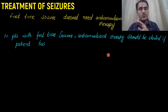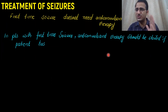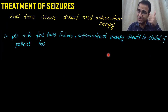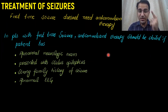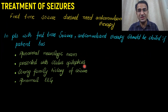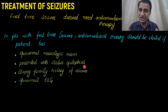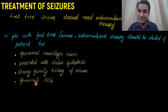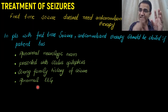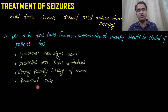First-time seizures do not need anticonvulsant therapy, unless there are certain exceptions: if the patient has an abnormal neurological exam, presented with status epilepticus, has a strong family history of seizures, or has an abnormal EEG. In any of these conditions, even a first-time seizure requires starting anticonvulsant therapy.